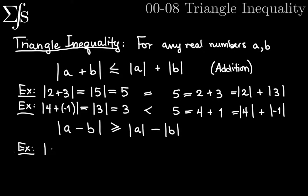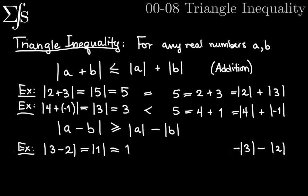Let's try some examples for the subtraction form. If I take the absolute value of 3 minus 2, that's 1, so the left side is the absolute value of 1, which is just 1. On the right side, the absolute value of 3 minus the absolute value of 2 is 3 minus 2, which is also 1. So they're equal again.